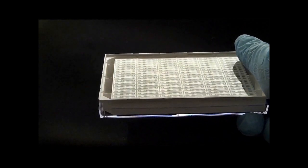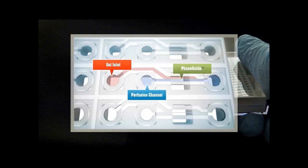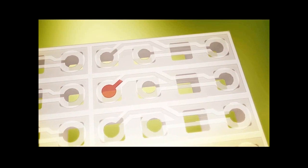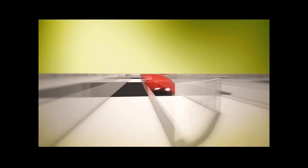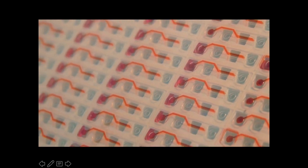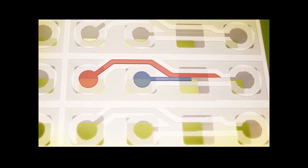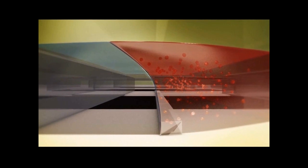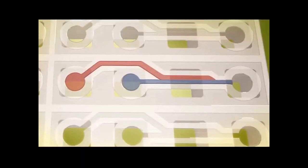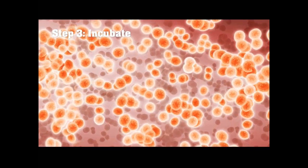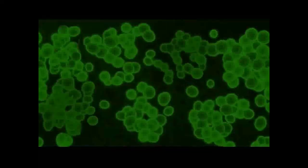The OrganoPlate contains up to 96 individual microfluidic networks with a gel inlet, perfusion channel, and phase guide. The gel goes into the device by capillary force, and the phase guide prevents the gel from jumping over to the adjacent channel. Once the gel is set, a virtual channel is created that can be perfused with medium. There are no physical barriers between the medium and the gel channel, allowing complete interaction of nutrients, growth factors, and pharmaceutical compounds between the medium and the cells. In this way, we can keep cells alive for weeks or months.